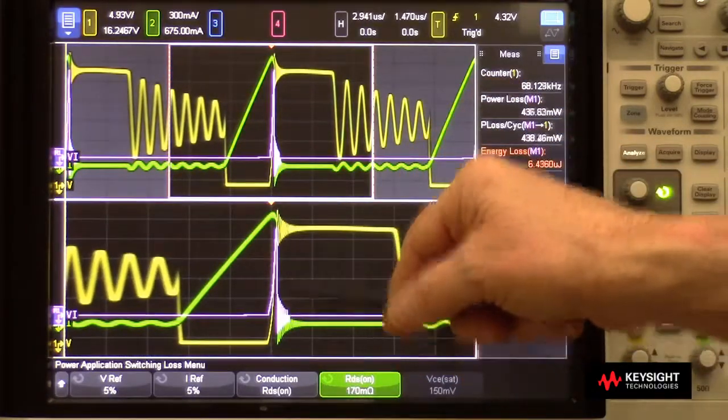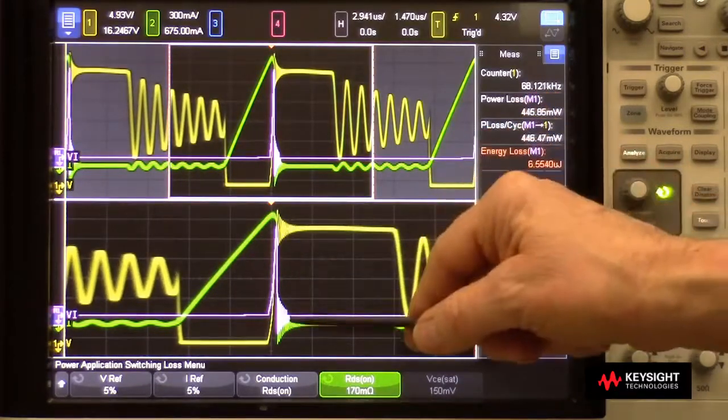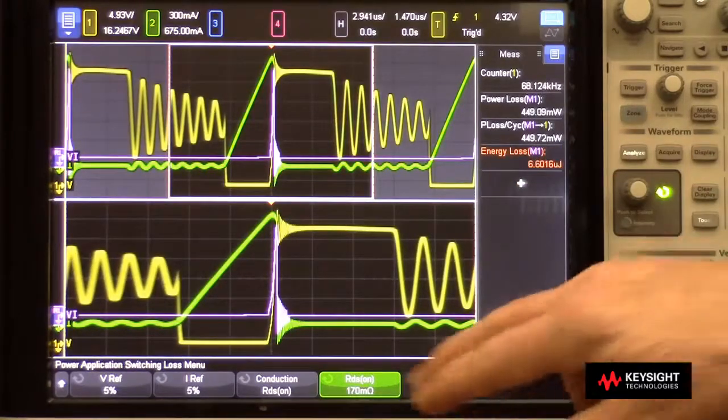But then during the turnoff phase, it reverts back to conventional volts times amps. And in many cases, this will give us a much more accurate measure of power loss.